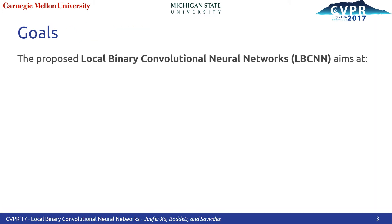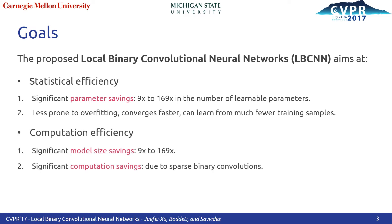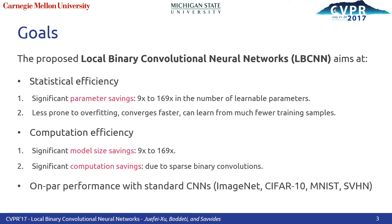In this paper, we propose local binary convolution neural networks, which aims at: number one, statistical efficiency with significant parameter savings and the ability to learn from much fewer training samples; number two, computation efficiency, primarily due to sparse binary convolutions; and number three, performance comparable to standard CNNs.